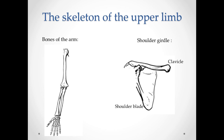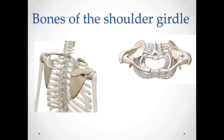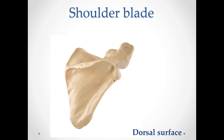The skeleton of the upper limb is represented by the bones of the shoulder girdle and the bones of the arm. The bones of the shoulder girdle — here we can see the clavicles and the shoulder blade. On the right is a top view and on the left is a rear view. The shoulder blade is a flat bone, triangular in shape. It is located behind the lateral side of the chest, at the level of the second to the seventh ribs. The shoulder blade has two surfaces, three angles and three edges.